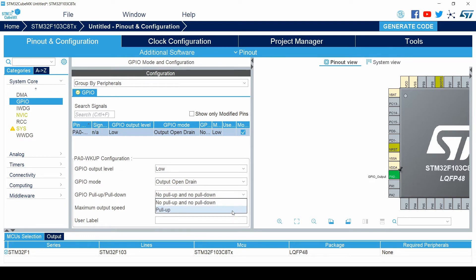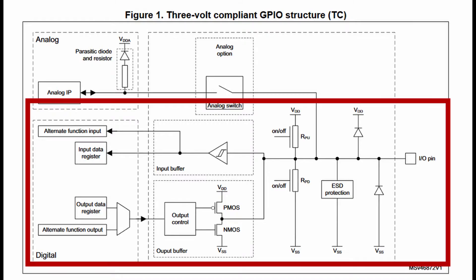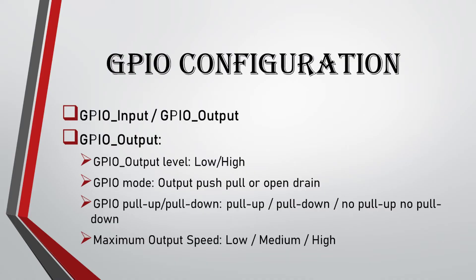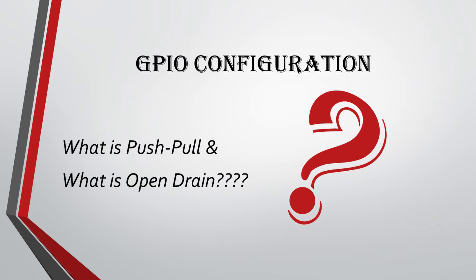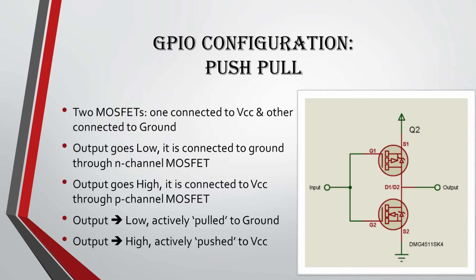Let's understand these settings by looking inside the datasheet of the STM controller, where you will find the GPIO structure. In push-pull output mode, there are two MOSFETs inside the microcontroller. One switch is connected to ground and the other is connected to VCC. When the output goes low, it is connected to ground through an N-channel MOSFET. When the output goes high, it is connected to VCC through a P-channel MOSFET. So when output is low, it is actively pulled to ground, and when output is high, it is actively pushed to VCC — hence the name push-pull.